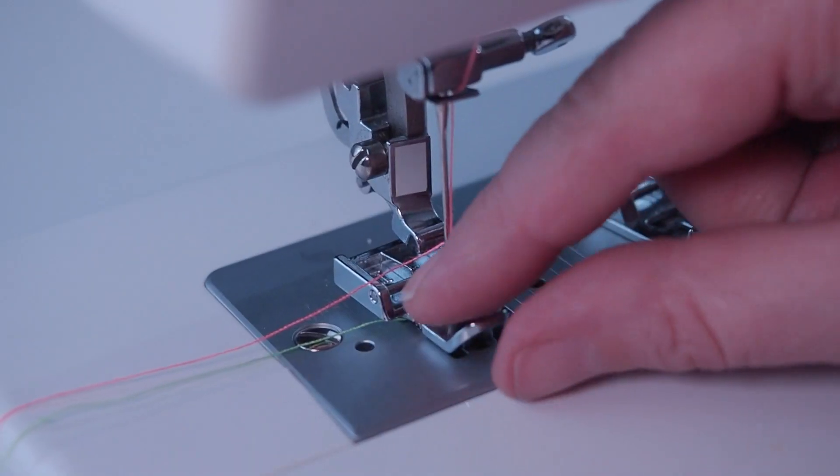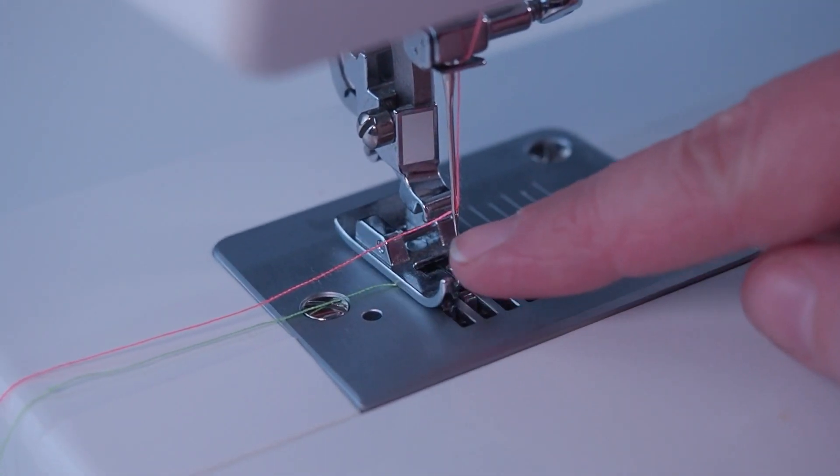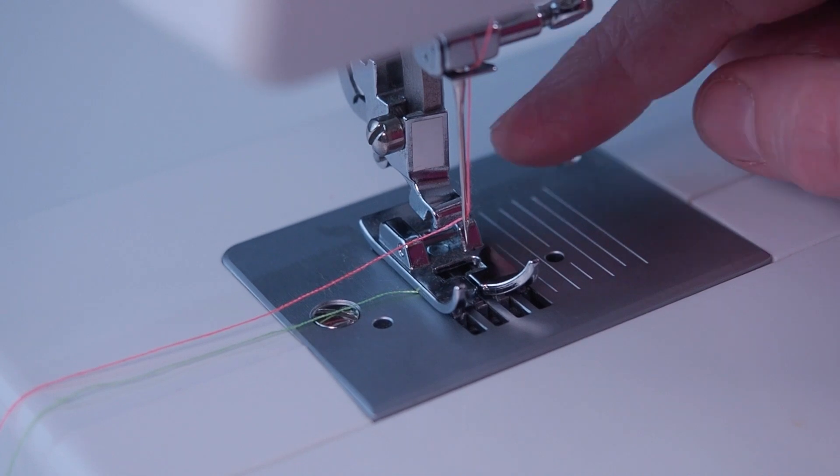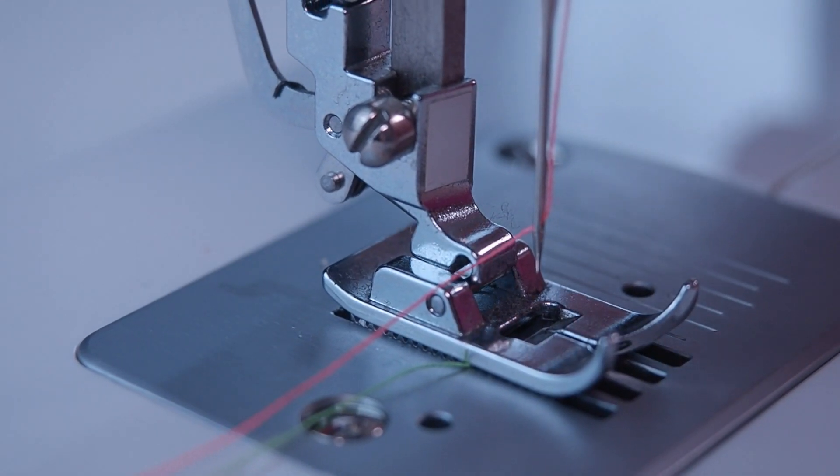Remove the presser foot you no longer wish to use and replace it with the presser foot you are wanting to use. Line that up underneath the little claw. We're going to lower the claw down.